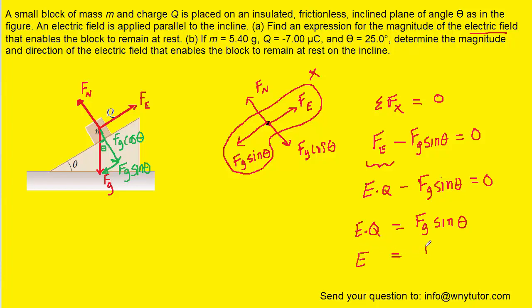This gives us the electric field equaling Fg sine theta divided by q. The question wanted just the magnitude of the electric field. Magnitude means we take the absolute value, so we'll take the absolute value of both sides. Since the gravitational force is always positive, we only need the absolute value of the bottom portion.